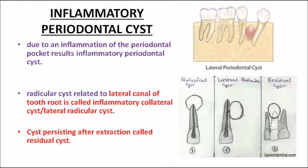The periapical cyst is the radicular cyst connected to the periapical area. If an infected tooth is extracted but the radicular cyst is not noticed on the radiograph beforehand, the cyst can persist even after extraction. That persisting cyst is called a residual cyst — not a radicular cyst. The cyst remaining after extraction of the affected tooth is a residual cyst.